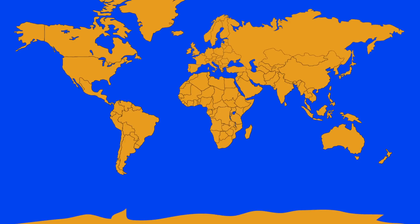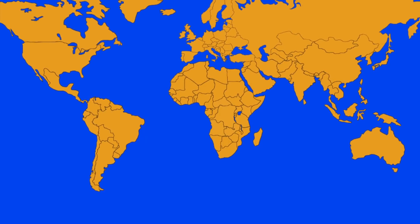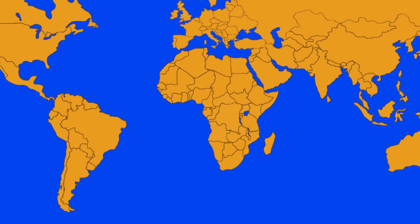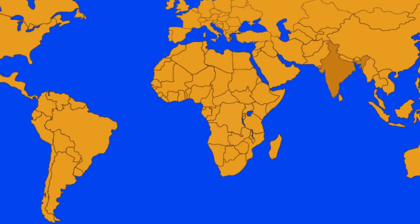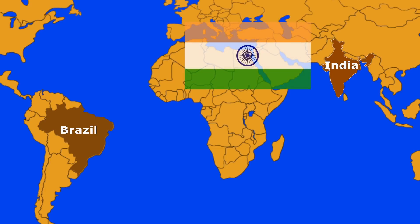In this video we shall learn about the location and extent of two different countries — on one hand it would be India and on the other hand it would be Brazil. When it comes to India, this is the flag of India. On the other hand, when it comes to Brazil, this is the flag of Brazil.